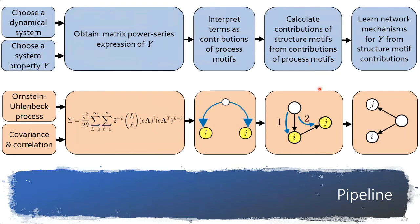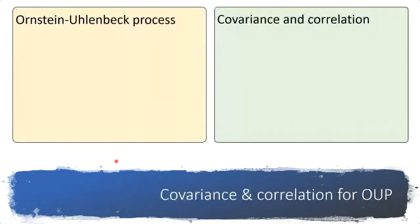Next, we interpret the terms of the matrix power series as contributions of microprocesses to the property y, and once we have the microprocesses we can start counting those that happen on small network structures. Using the contributions of process motifs we can then infer the contribution of small network structures to the system property y, and finally learn how network structure can enhance or reduce information-theoretic measures.